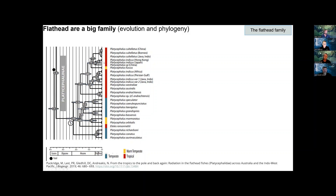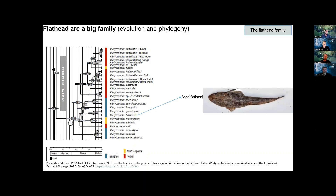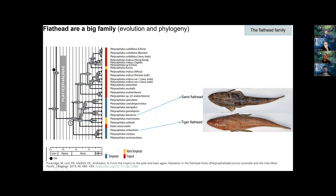The phylogenetic plot shows the relationship between those different flathead. You can see the red lines showing warm climates — China, Borneo, Hong Kong — and then we come down into the blue, into some of the species we have in our backyard. Our two main species in Tasmania are sand flathead, Platycephalus playcensis, and Platycephalus richwoodsi, which is the tiger flathead.